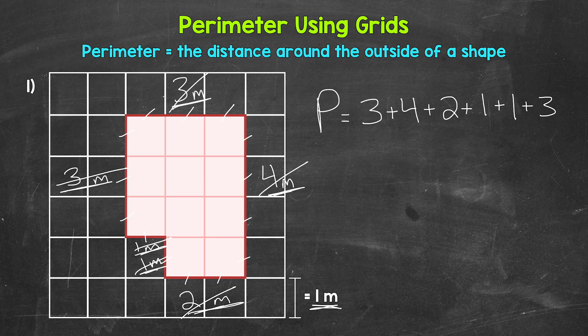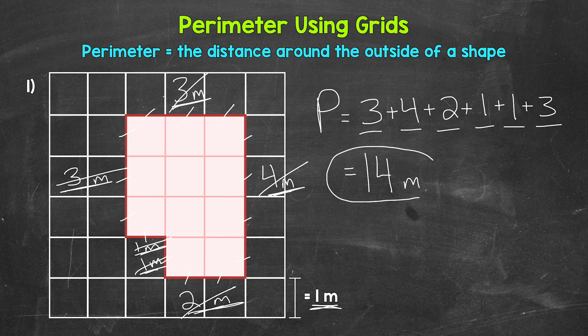Let's add now. Three plus four is seven, plus two is nine, plus one is ten, plus one is eleven, plus three is fourteen. So the perimeter equals 14 meters. Our focus here is to add side lengths to find the perimeter, because our next step is to find perimeter without using grids — so we won't have the option of counting each individual unit around a shape.